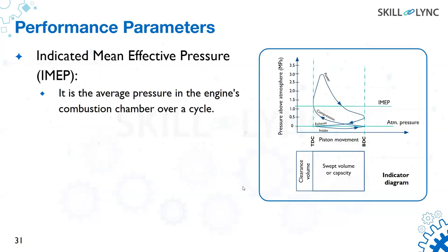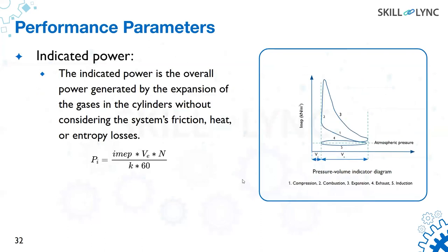Performance parameters identify how efficiently the system is working. The IMEP (Indicated Mean Effective Pressure) is the average pressure in the engine cylinder across all four strokes. The indicated power is the theoretical power generated inside the engine cylinder — the power produced from combustion, before friction and other losses.